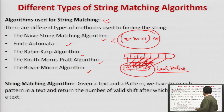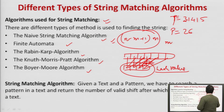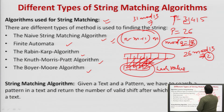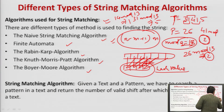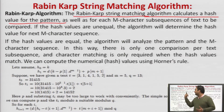Basically, suppose there is a pattern like 3 1 4 1 5, and a text. There may be a pattern 2 6. We will be given a mod value q, say 13. We calculate 26 mod 13, which returns 0 — wait, 36 mod 13 returns some value. Then 31 mod 13 returns 5, then shift by 1: 14 mod 13 returns 1, then 41 mod 13 returns 2. Now 41 returns 2 and 26 also returns 2 — the same hash values. Once the hash values match, then we match the characters. I will explain the difference after discussing the definition.